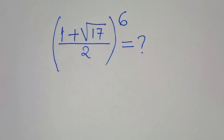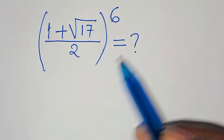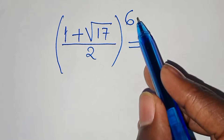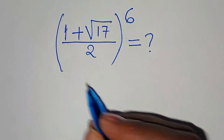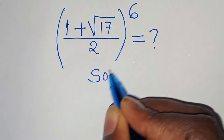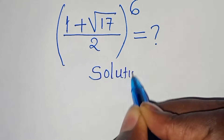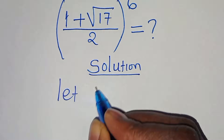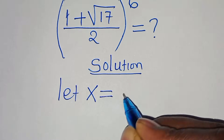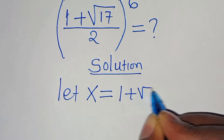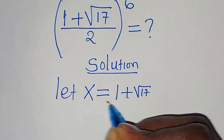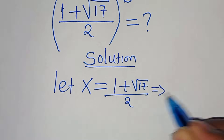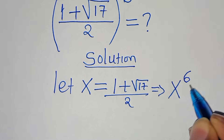Hello everyone, you are welcome to solve this nice math problem here, which is (1 plus root 17) divided by 2, raised to the power of 6. Now let's provide a solution. We can let x be equal to (1 plus root 17) divided by 2, so this implies the question is: what is x to the power of 6?